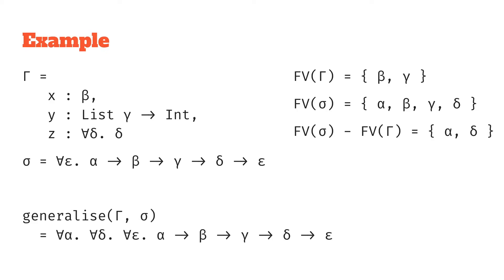So we covered what generalization is, we looked at a generalization function which finds the most generalized type with respect to some context. You can kind of see how this is related to instantiation. It's almost the opposite approach where rather than removing for all qualifiers and instantiating them we're adding for all quantifiers and generalizing a type. Thanks for watching and see you in the next video.